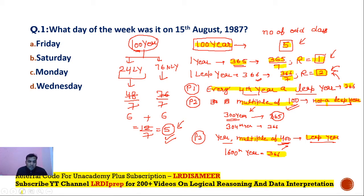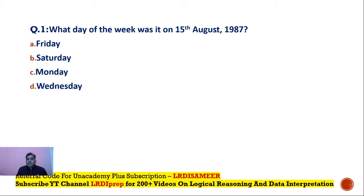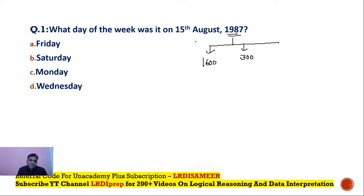Now let's use this information to answer the question: what day of the week was it on the 15th of August 1987? The approach is to divide the year 1987 into parts: 1600 years, then 300 years — giving 1900 — and then 87 years, which is split into 86 complete years and the 87th year up to 15th August.